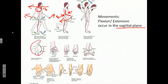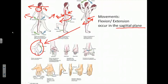Moving down to the wrist joint — a higher magnification view here — we also have the ability to flex and extend our hand at the wrist. When we flex our hand at the wrist, we're moving our palm forward, decreasing the angle between the palm and the anterior forearm. When we extend or even hyperextend our hand at the wrist, we are moving our hand back into the anatomic position or hyperextending it. So we have a series of joints at the wrist that permit flexion and extension.